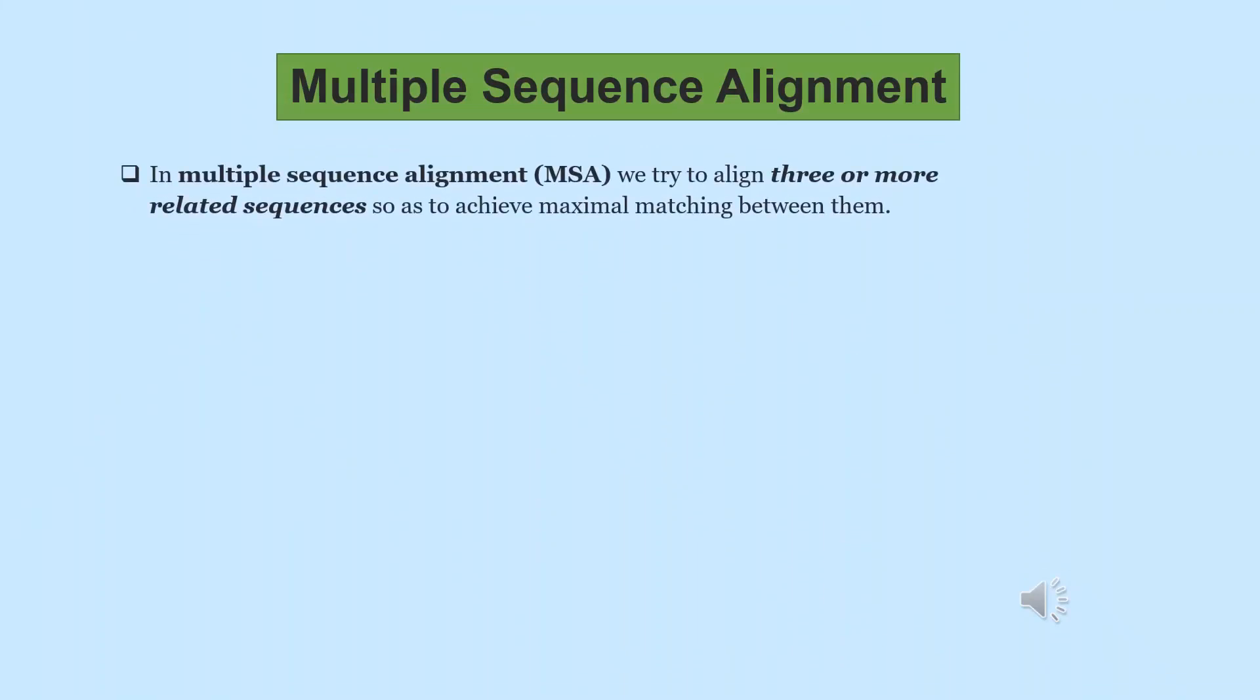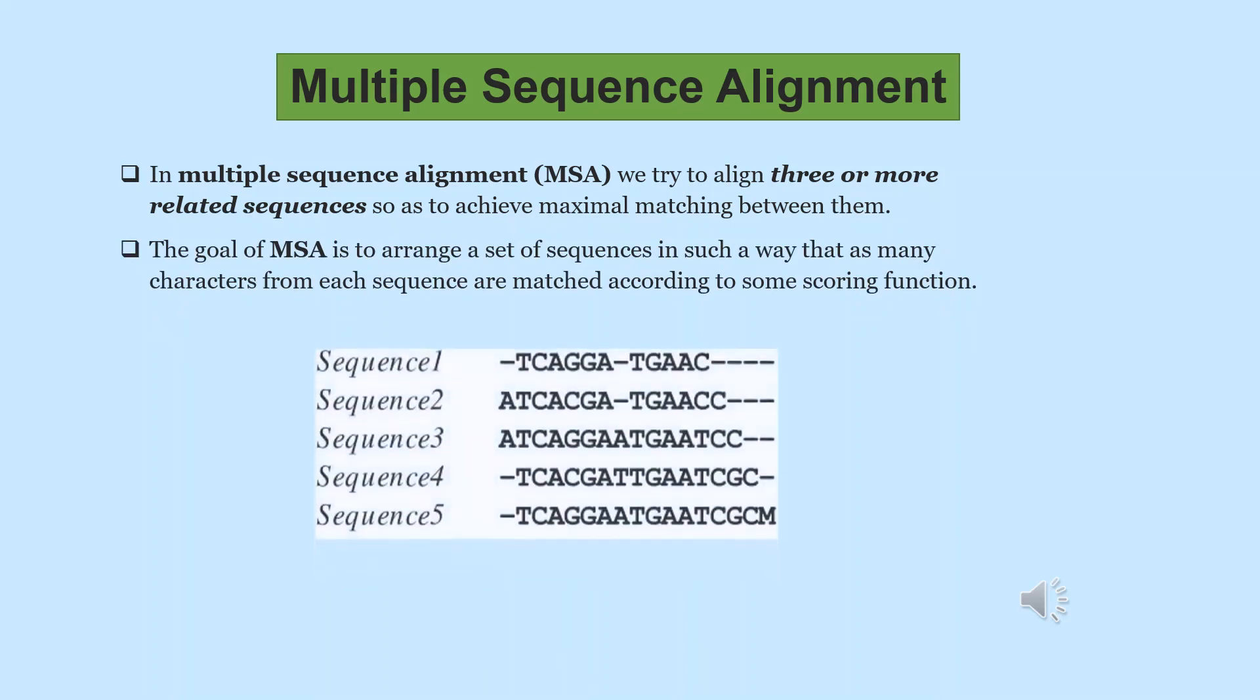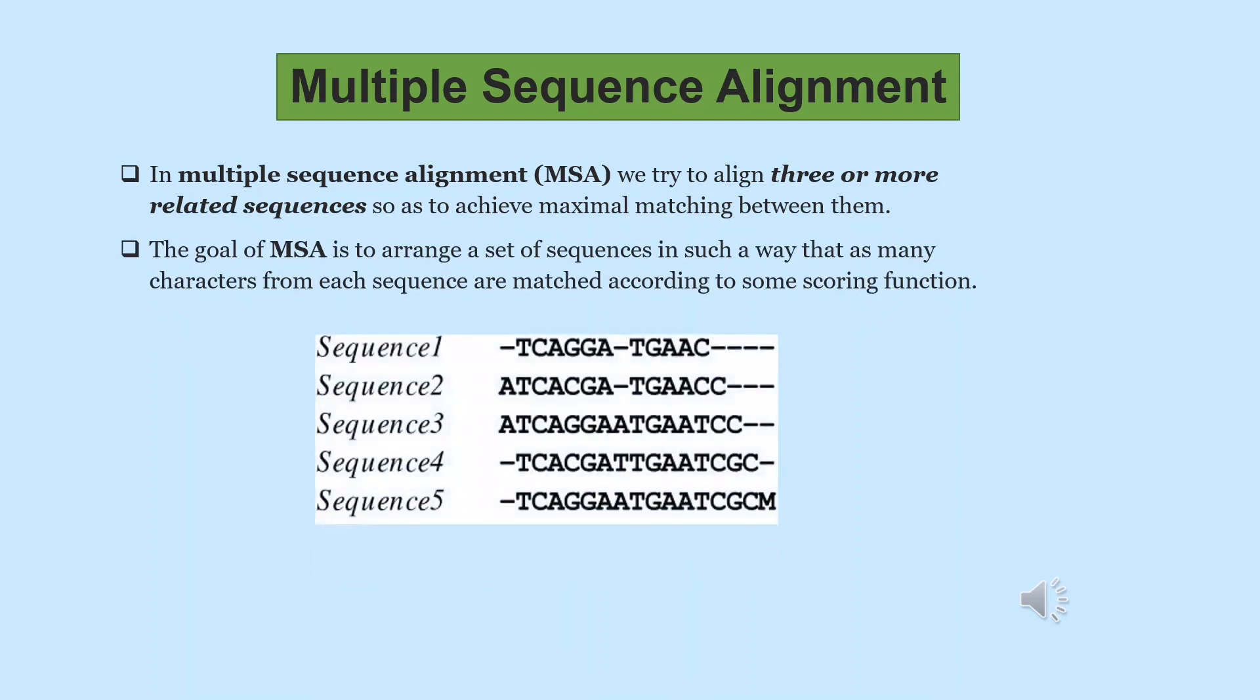Now, we move to multiple sequence alignment. In multiple sequence alignment, or MSA, we try to align three or more related sequences so as to achieve maximal matching between them. The goal of MSA is to arrange a set of sequences in such a way that as many characters from each sequence are matched according to some scoring function. For example, the MSA is shown in the following five sequences, study it careful. Matches are shown as cross line, gap is left as free, mismatches are also visible.